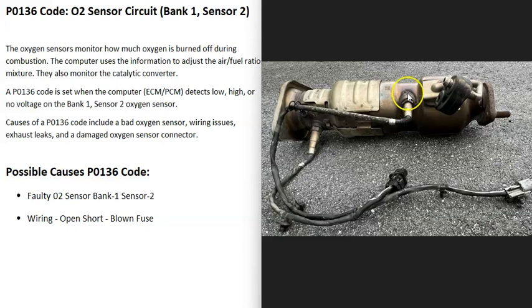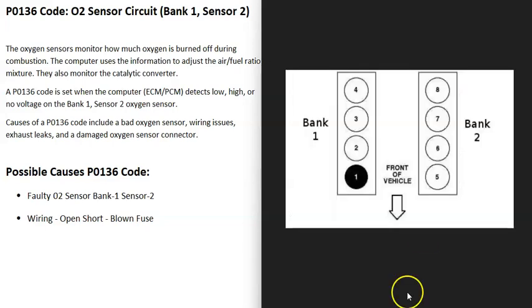Mainly with the Bank 1, Sensor 2 O2 sensor. It's going to need to be troubleshot to know why. If you have a V6 or V8 engine, the engine's going to have two banks. Bank 1 is always the side of the engine with the number one cylinder.